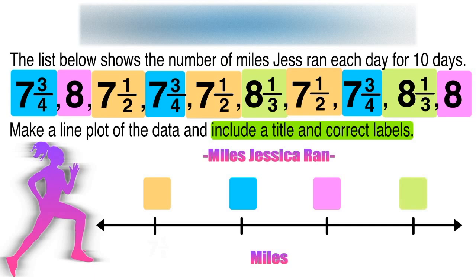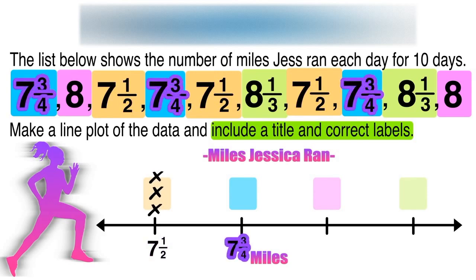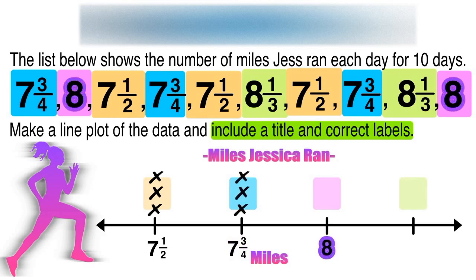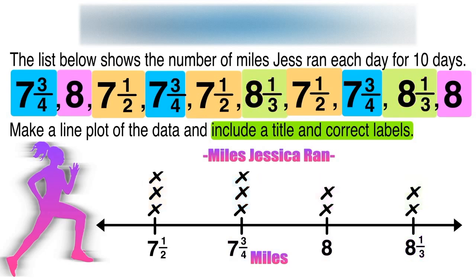Starting with seven and one-half, we label that on our line. That value occurs three times, so we include three X marks. Our next value, seven and three-quarters, also occurred three times, so we put three X marks. Our next largest value, eight, occurred two times, and our largest value, eight and one-third, also occurred two times. We have successfully constructed a line plot to represent this data for Jessica's miles over that 10-day period.